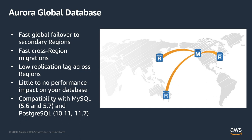Since Aurora is available in MySQL and Postgres compatibility versions, for MySQL the global database is available for both 5.6 and 5.7 engines. For Postgres, it is available for engines with compatibility 10.11 and 11.7 and above.